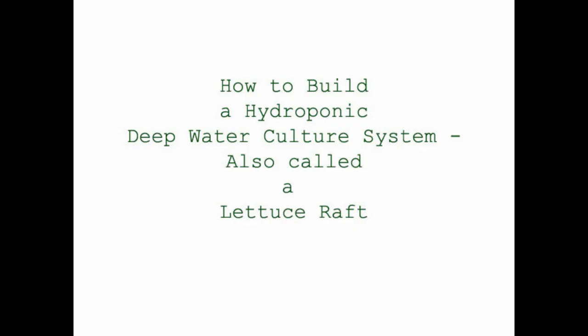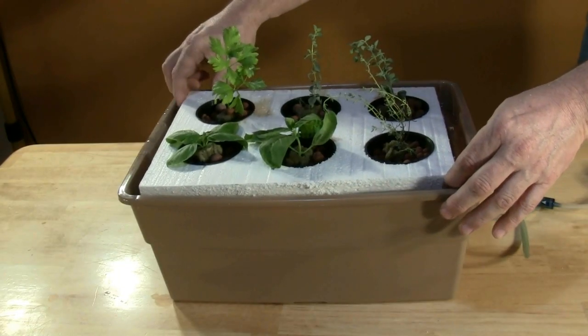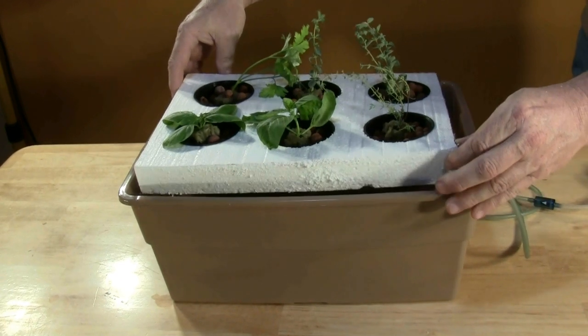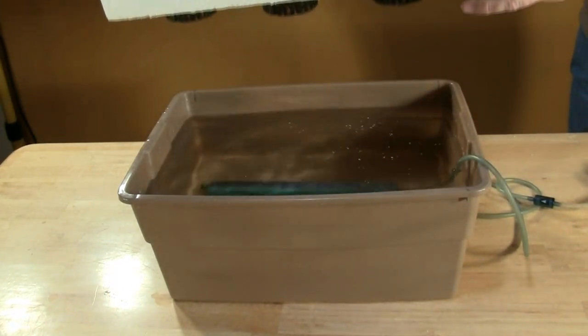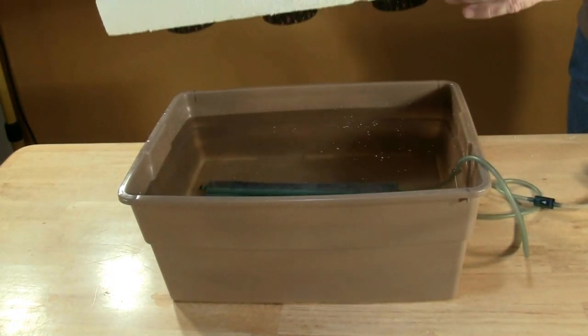How to build a hydroponic deep water culture system, also called a lettuce raft. A deep water culture system allows plant roots to grow downward into a container of nutrient-enriched water. The plants are anchored in a styrofoam raft that floats on the water.